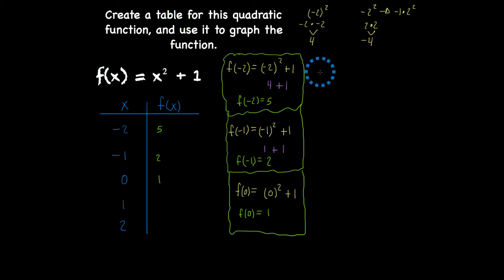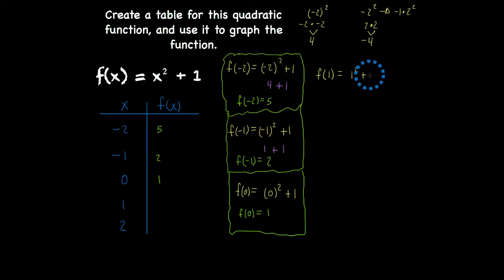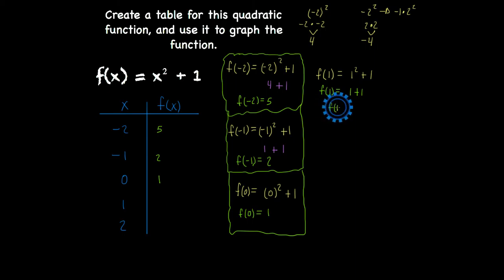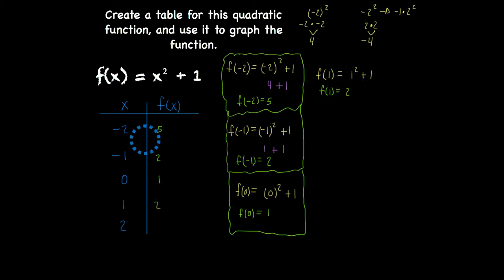Now f of 1. f of 1 is equal to 1 squared plus 1. One times itself is 1, so 1 plus 1 — f of 1 is equal to 2.